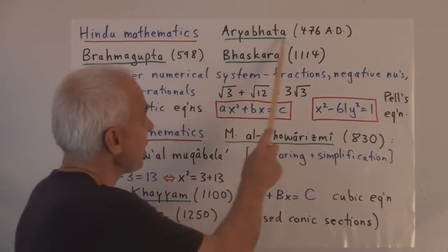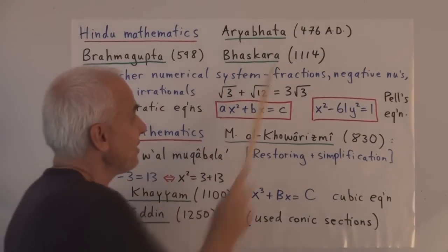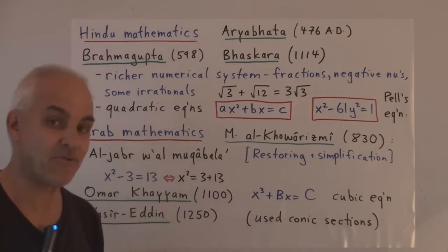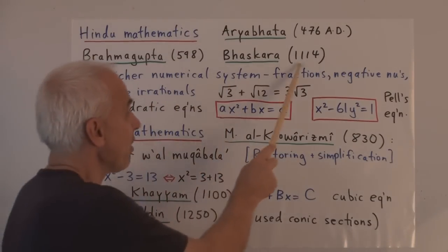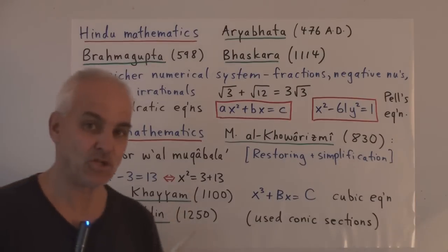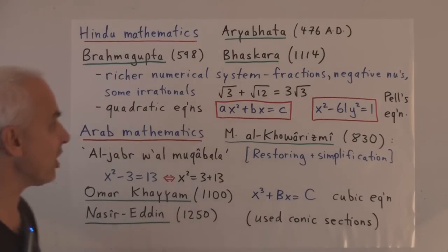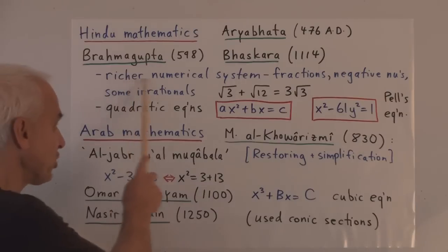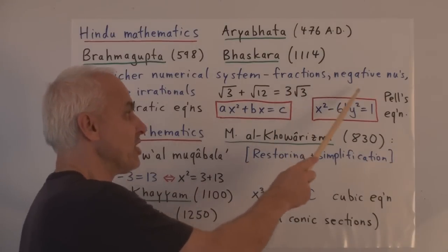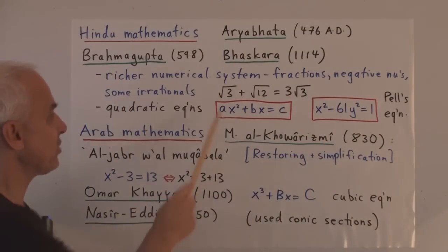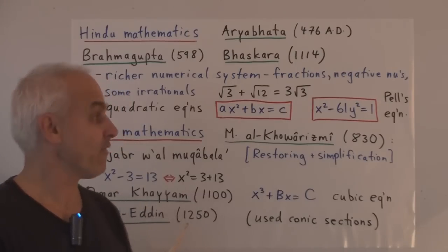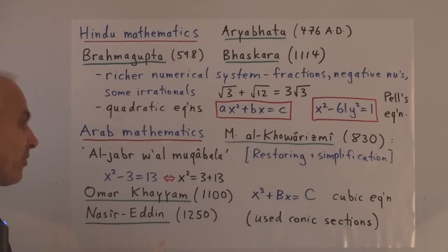And some names that are notable are Aryabhata, who lived around 476 AD, Brahmagupta, around 598, and Bhaskara in 1114. So aspects of this Hindu arithmetic slash algebra include, first of all, a richer numerical system, which was quite comfortable with working with fractions, negative numbers, and also irrational numbers like square roots of natural numbers, square root of three, square root of twelve equals 2 times square root of three, and so on.